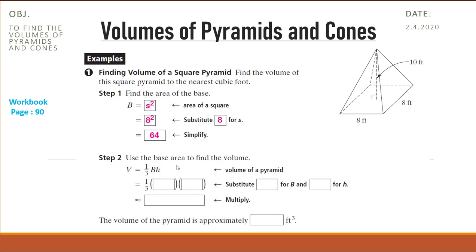Now let's use the base area to find the volume. The rule: one-third base area multiplied by height. So one-third multiplied by 64, and the height is 10. So substitute 64 for B and 10 for H. Simplify this, you'll find the answer approximately 213. So the volume of the pyramid is approximately equal to 213 cubic feet.